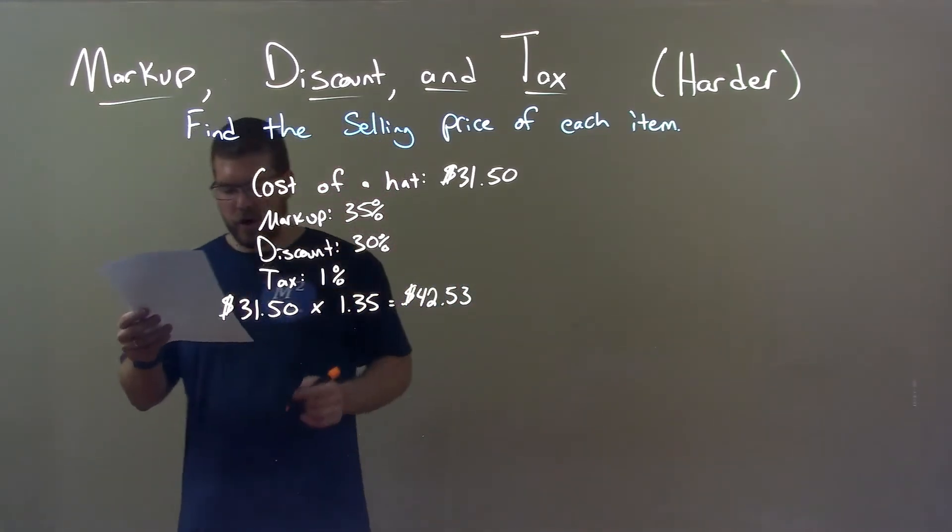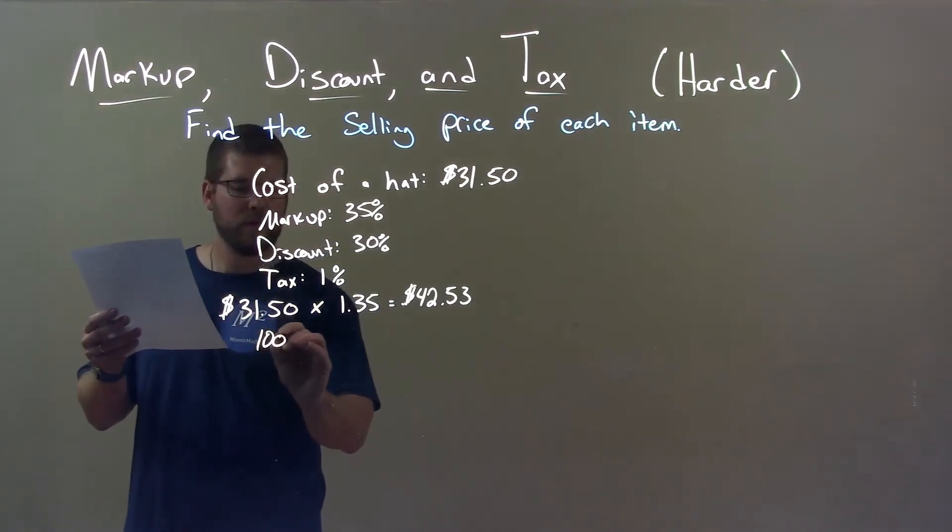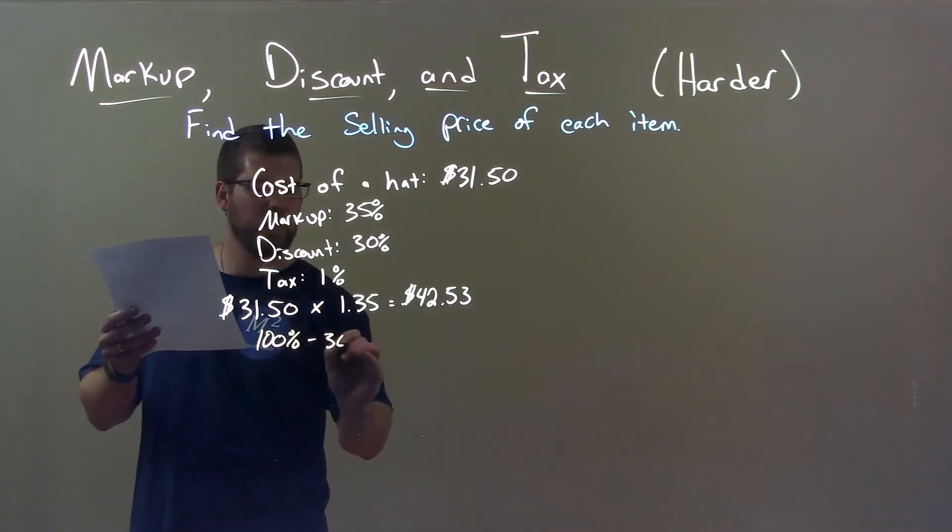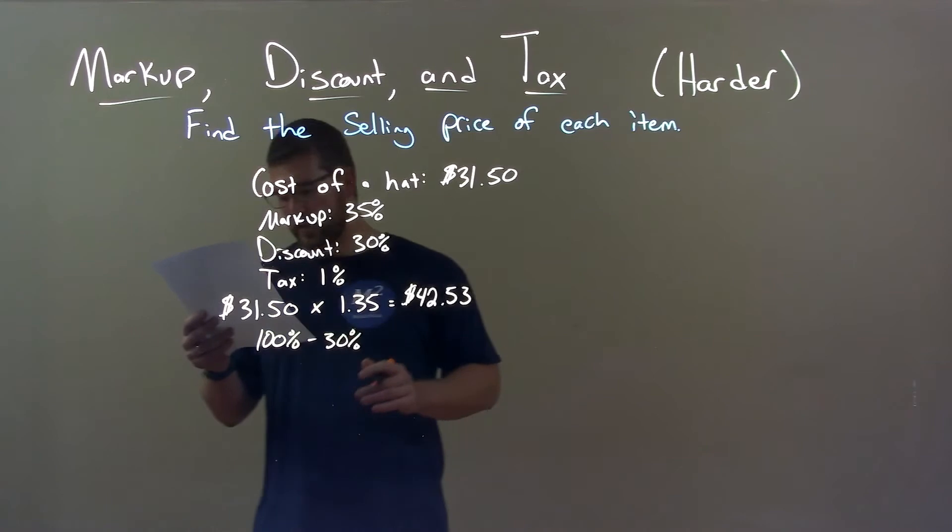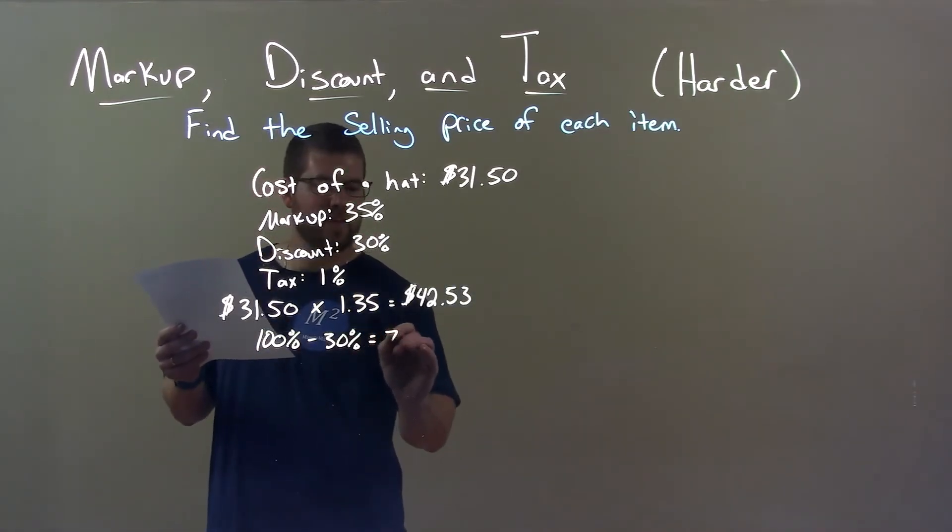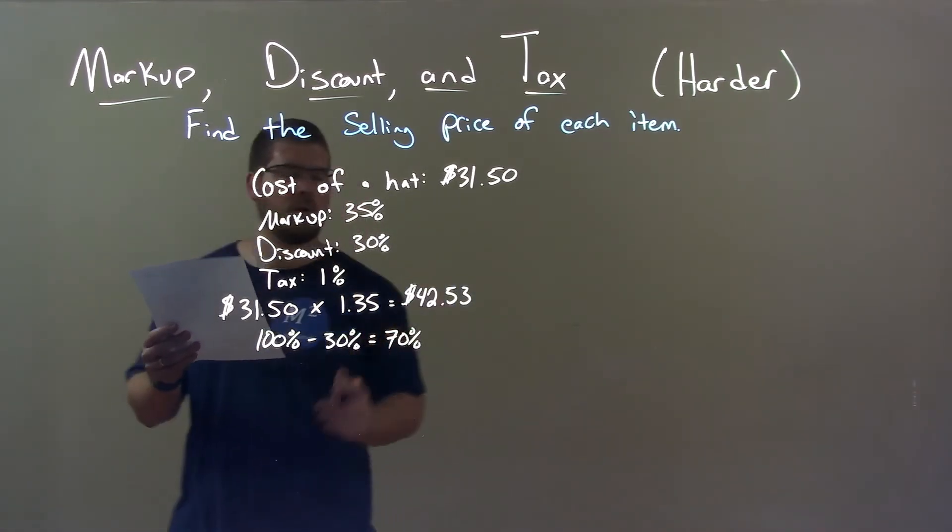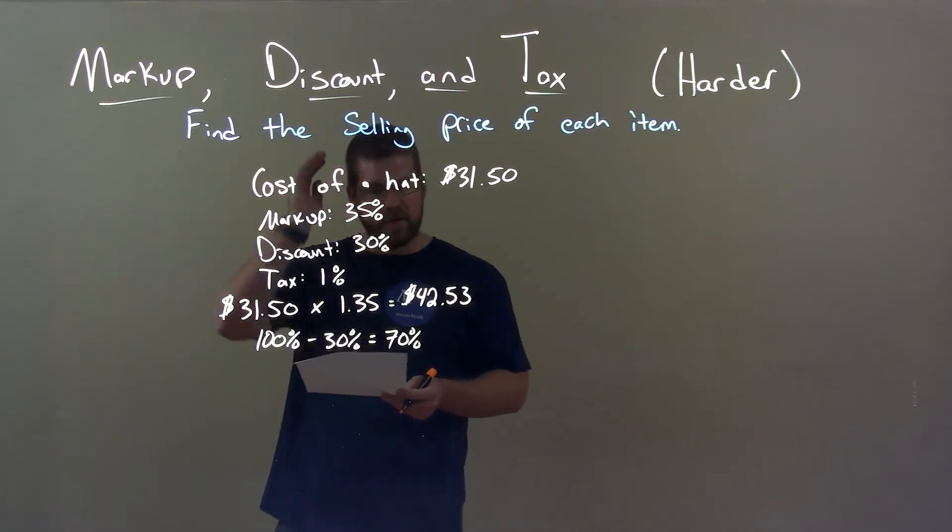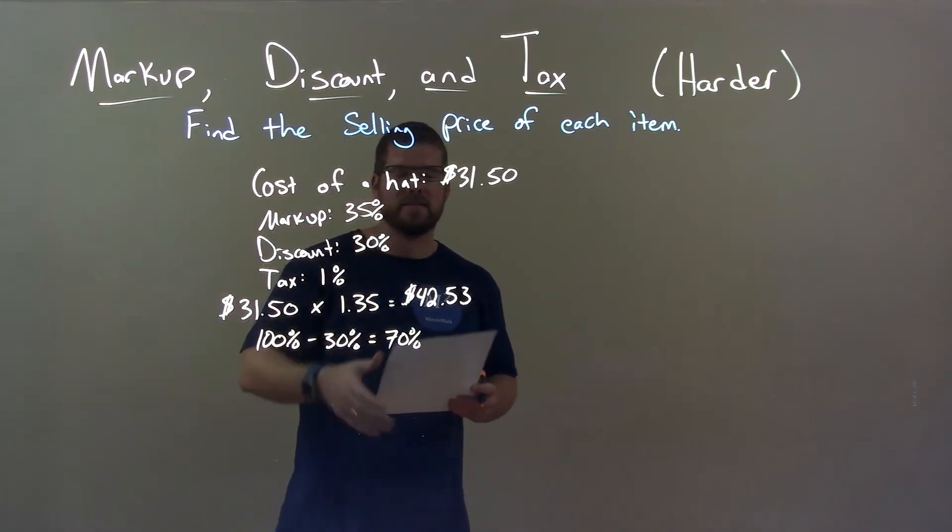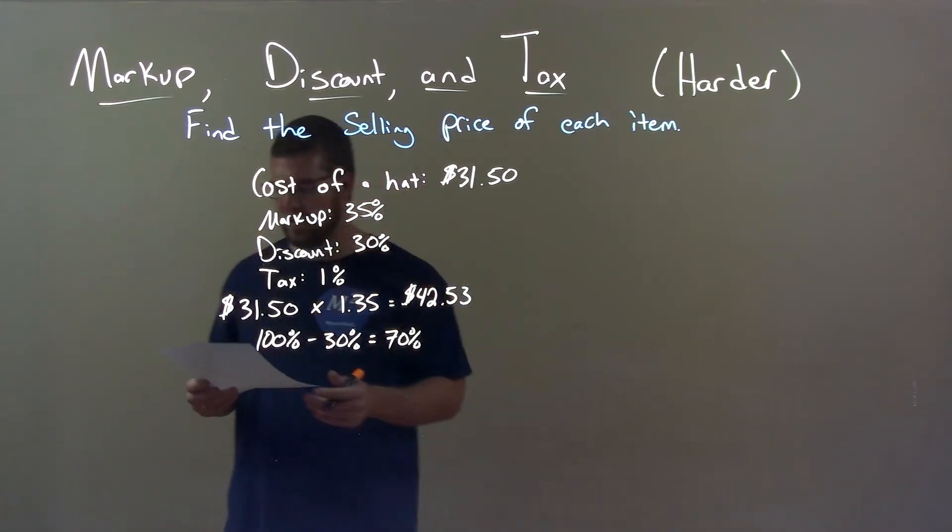Now they say we have a 30% discount. So what I do here, I take 100% minus the 30% and what that allows me to show is that I'm going to pay 70% of the $42.53. So the discount of 30%, we converted that to say we're going to pay 70% of this amount here.